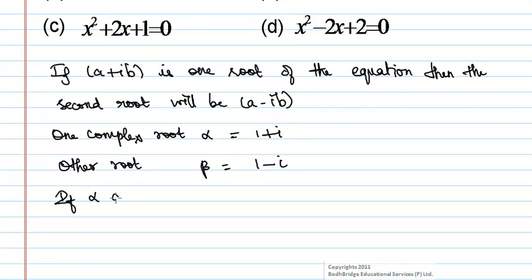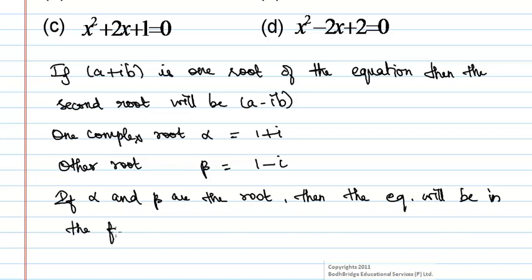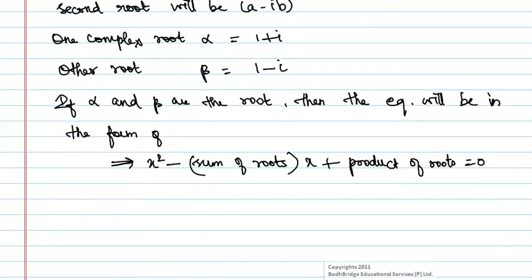If α and β are the roots, then the equation will be in the form x² - (sum of roots)x + (product of roots) = 0, which implies x² - (α+β)x + αβ = 0.